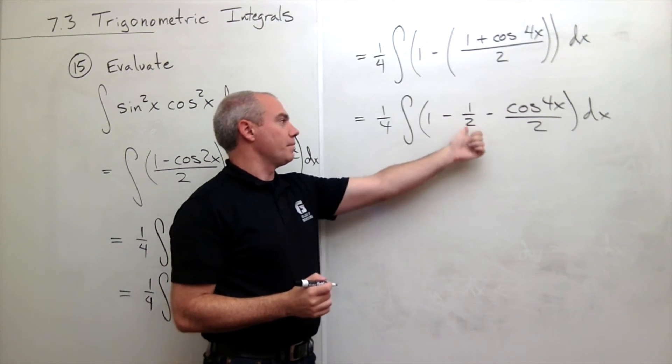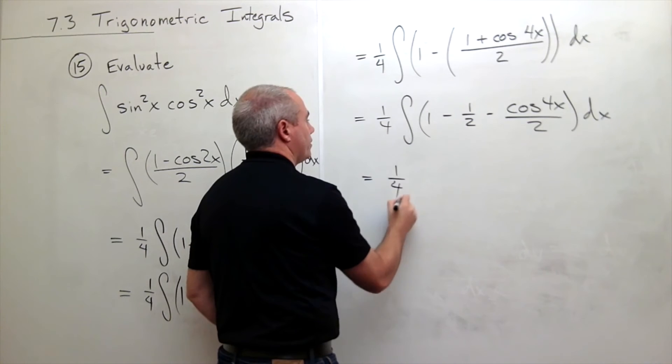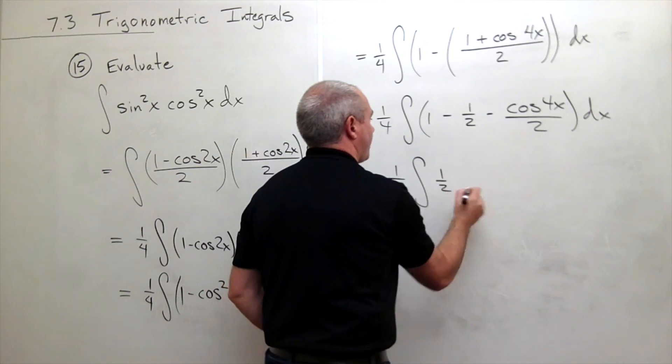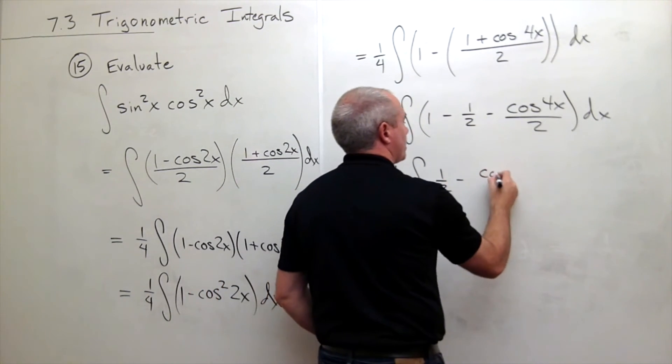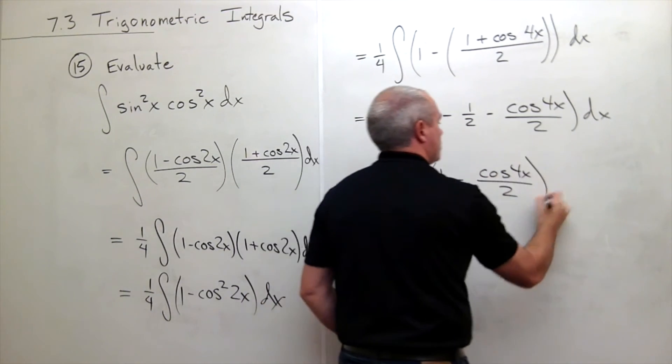I can combine the 1 and the minus 1 half into just a half. So I get 1 fourth integral of 1 half minus cosine of 4x over 2 dx.